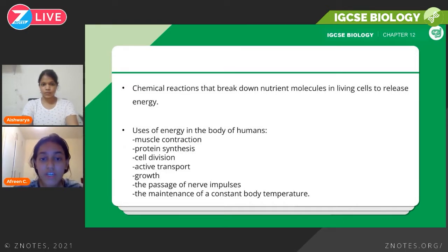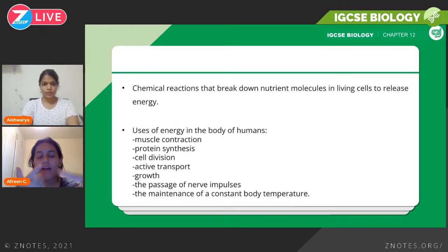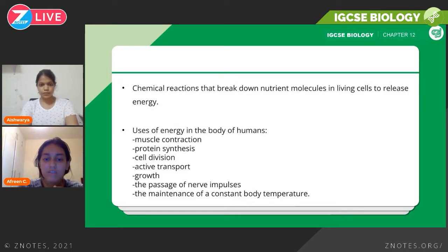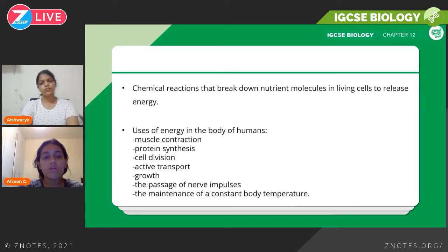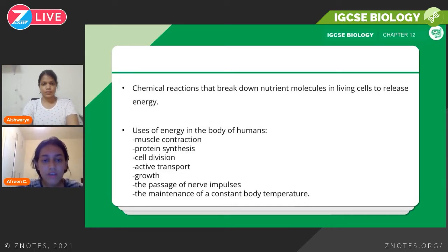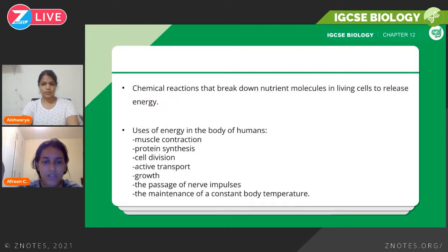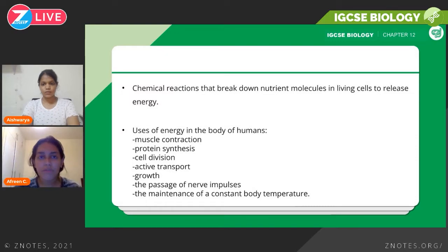Now we look at the uses of energy in the human body. There's muscle contractions, protein synthesis, cell division, active transport, growth, passage of nerve impulses, and maintenance of constant body temperature. A lot of these processes are things that we will look into in coming chapters, but some of these — like cell division, growth, active transport, and muscle contraction — are things that are happening in your body constantly throughout the day.